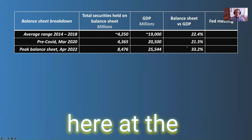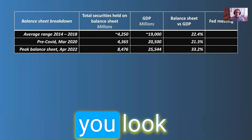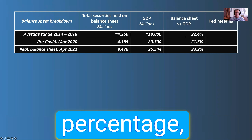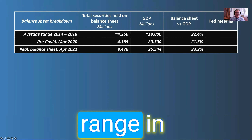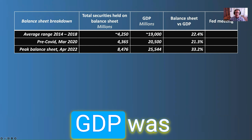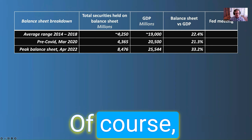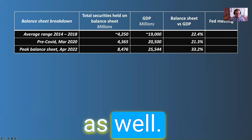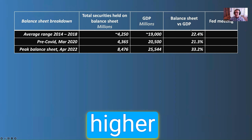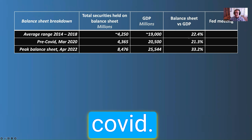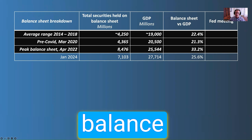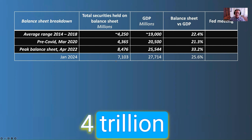Looking at the data, you can see total securities held on their balance sheet versus gross domestic product as a percentage. The average range from 2014 to 2018 was about 22% of what they held versus GDP. As GDP continues to grow, the debt they're holding does as well. The current percentage is around 33%, which is 50% higher than what they were comfortable with pre-COVID. As of January 2024, they've been selling securities off the balance sheet — from $8.4 trillion down to $7.1 trillion.